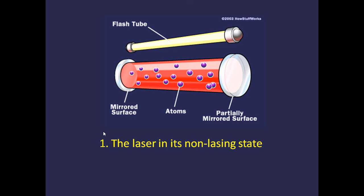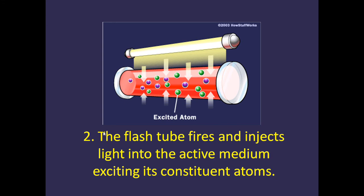So effectively the basic setup of a laser is this. You have an active medium containing atoms, some form of energy input, in this case a flash tube that would release light. The flash tube, when it fires, releases photon light into the active medium, and this excites the constituent atoms within it.